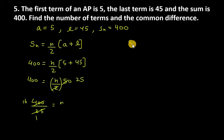S16 equals 16 over 2 times 2a plus n minus 1 times d. Substituting, we get 400 equals 8 times 10 plus 15d, where a is 5, n minus 1 is 15, and S16 is 400.